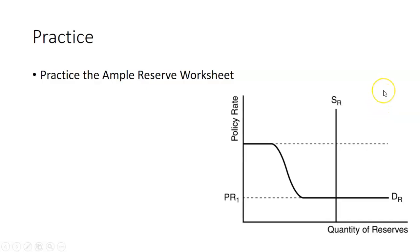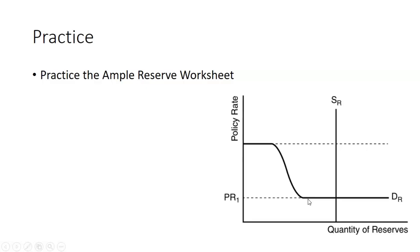Hope that helped! Talking about the reserve market: the downward sloping portion is the limited reserves, the flat part is the ample reserves, the ceiling is the discount rate, and the bottom portion — the floor — is the interest on reserves. Those are U.S.-based terms, so we can use 'policy rate' in general. This whole graph identifies where the federal funds rate is going to be.